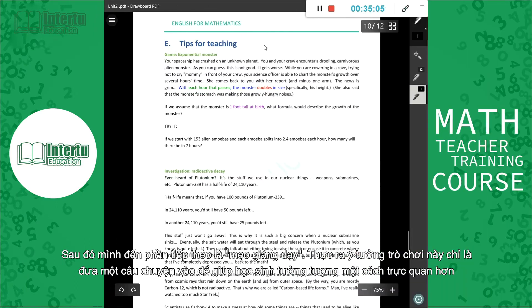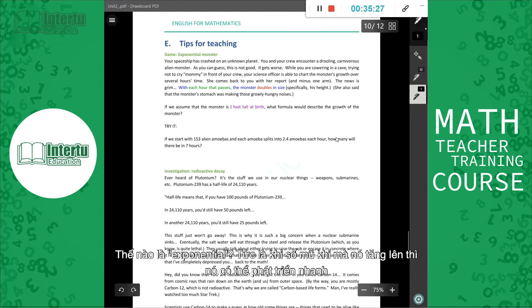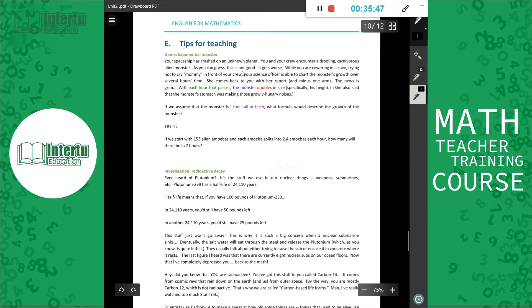[Vietnamese: Then we come to the tips for teaching section. The idea of this game is just to bring in a story and help students visualize more intuitively what exponential means - when it increases, how fast it can grow.] You and your crew encounter a drooling, carnivorous alien monster. As you can guess, this is not good. It gets worse. While you're cowering in the cave, trying not to cry in front of your crew, your science officer is able to chart the monster's growth over several hours. She comes back to you with her report and minus one arm. The news is grim. With each hour that passes, the monster doubles in size, specifically his height. She also said that the monster's stomach was making these growly hungry noises.